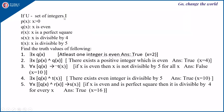Suppose the universe U is the set of integers, and p(x): x > 0, q(x): x is even, r(x): x is a perfect square, s(x): x is divisible by 4, t(x): x is divisible by 5. Find the truth values for the following. First, ∃x q(x): since x is even — if we consider any even integer, x is even is true. At least one integer is even, so the answer is true. For example, x = 2, 4, or 8.